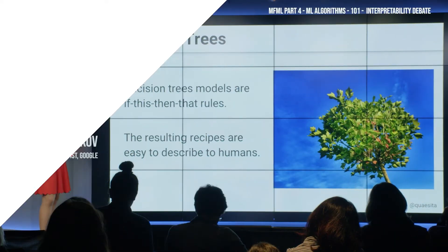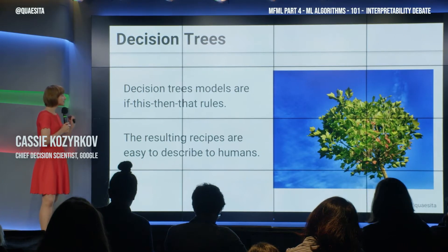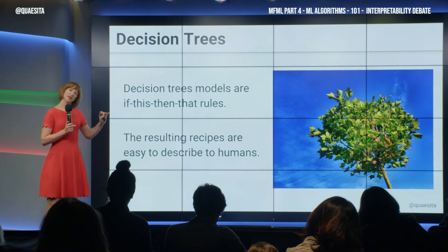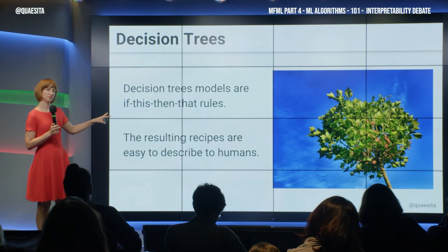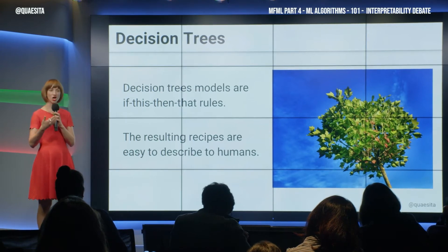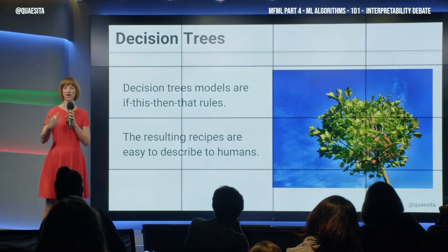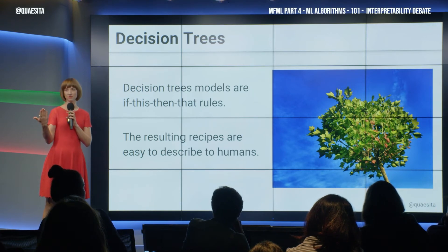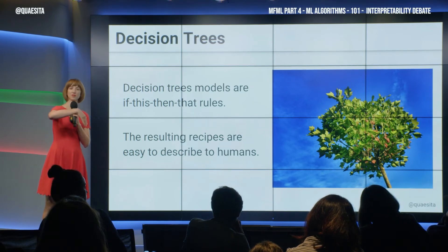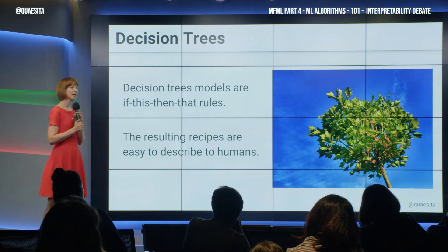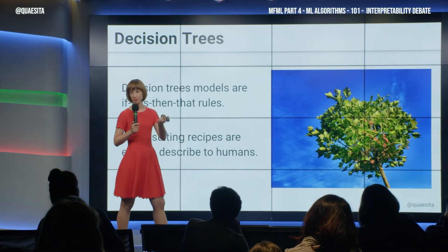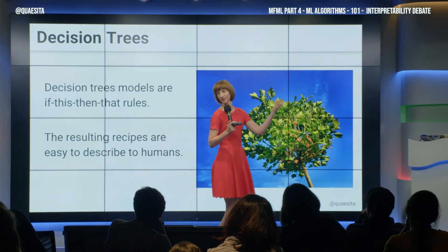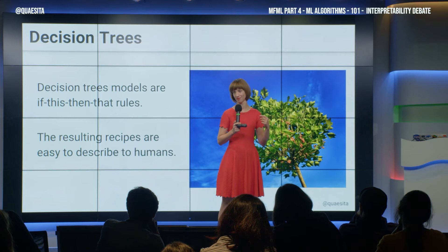Decision trees are if-this-then-that rules, and the resulting recipes are easy to describe to humans. Notice I don't say interpret — I'm saying easy to describe. It's hard to beat: if someone asks how this thing makes its decisions, you say 'Is it above 127 minutes or below?' Very easy to describe. But please don't interpret them without following up with other data and actually checking your interpretation.